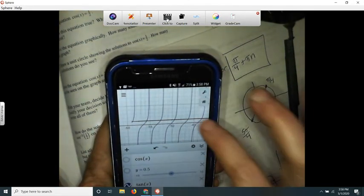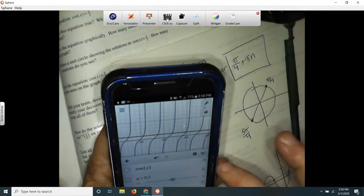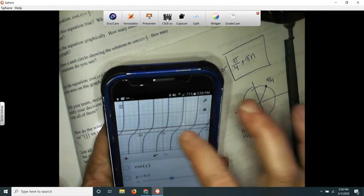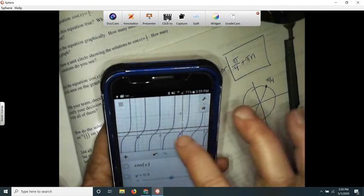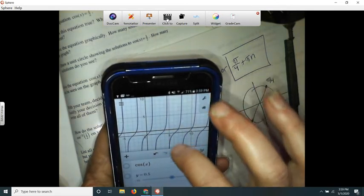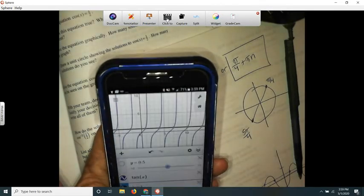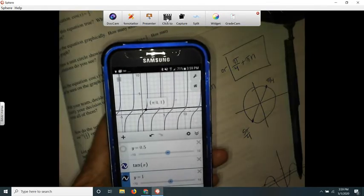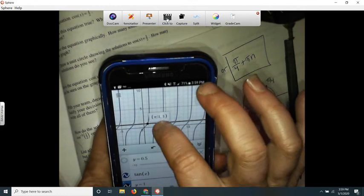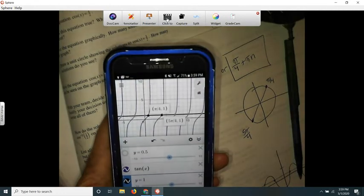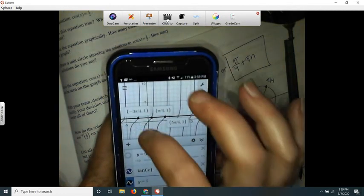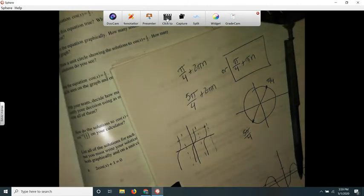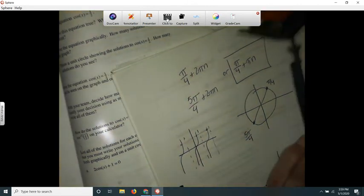It goes on forever and ever and ever and ever. If I'm just right here, pi over four, right, and then the next one would be five pi over four, and then there, but there's other ones all over the place, right? So that...